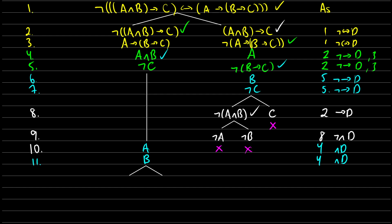We're going to get branching paths because we have 'a arrow (b arrow c)', which means either the antecedent is false or the consequent is true. Checking off line 3, we get either not-a or we get 'b arrow c'. This is line 12, from line 3, arrow decomposition.